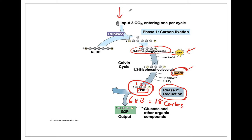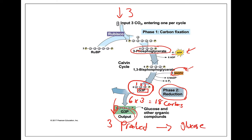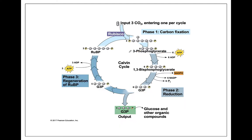We only put in three carbons, so we can only pull out three, because we need enough to continue the cycle and remake our RuBP. So one molecule of G3P comes out as our product, which we can combine into other organic molecules such as glucose. Five G3P molecules have to keep going to supply all the carbons needed to remake our RuBP so that the cycle can continue.